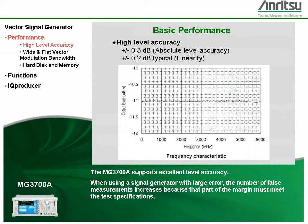The MG3700A supports excellent level accuracy. When using a signal generator with large error, the number of false measurements increases because that part of the margin must meet the test specifications.